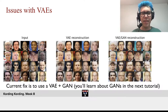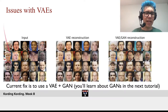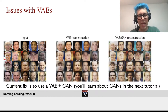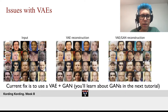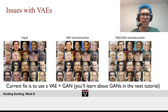There are issues with variational autoencoders, and we will learn a lot about them in the next tutorial. If we take an input of faces and do VAE reconstructions, these faces all look kind of bland — there's something missing about them. Not like no one's wearing glasses anymore, for example. We might be able to combine VAEs with GANs, which we'll do next time, and produce much better images. That's what we will do next week.